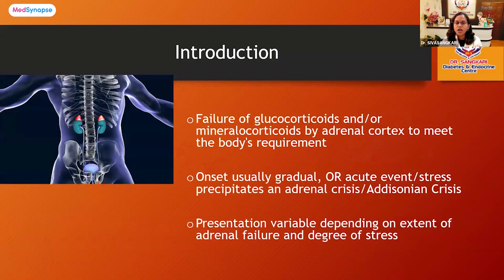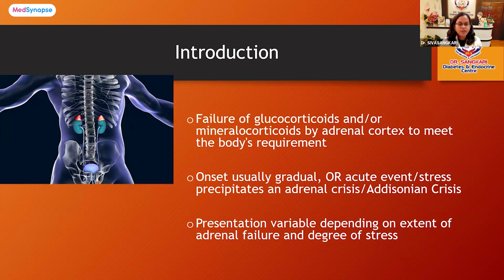We call it adrenal insufficiency when there is a failure of glucocorticoid hormone or mineralocorticoid produced by the adrenal cortex to meet the body's requirement. The onset is usually gradual; however, in some cases the patient can present as an acute Addisonian crisis. These presentations are variable according to the extent of adrenal failure and the degree of stress.